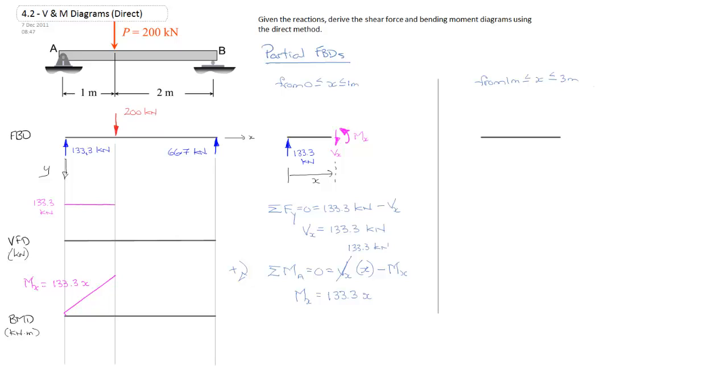And now we'll go ahead and do the second domain. So I'll complete my partial free body diagram and draw in my reaction. In this case, we have our point load applied at one meter. Again, we'll have v at x and m at x. And I will label x again.